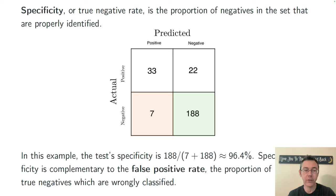Specificity, of course, is complementary to the false positive rate, the proportion of true negatives that are wrongly classified. That would be 7 out of 195, about 3.6%.